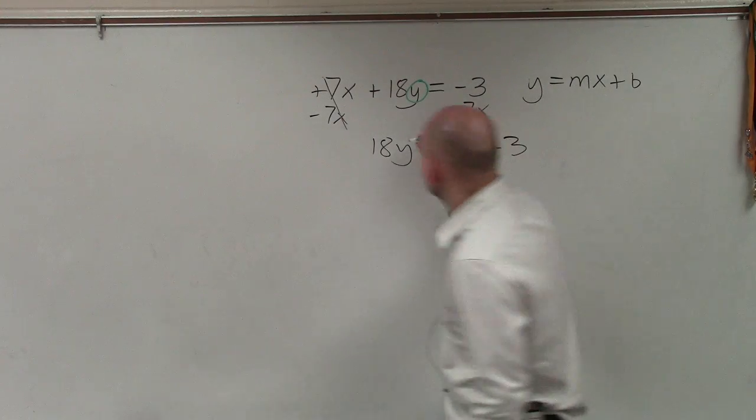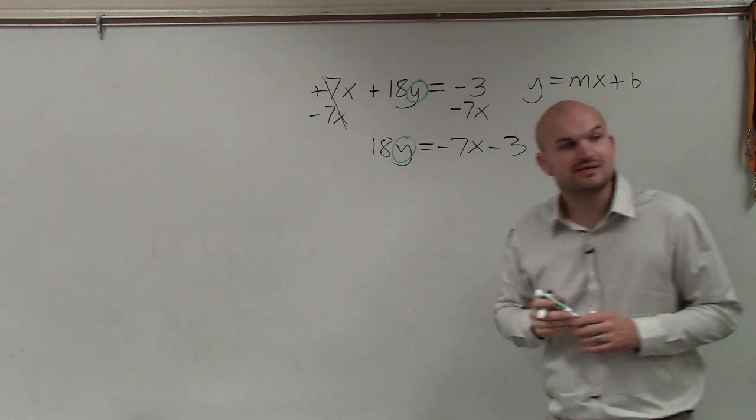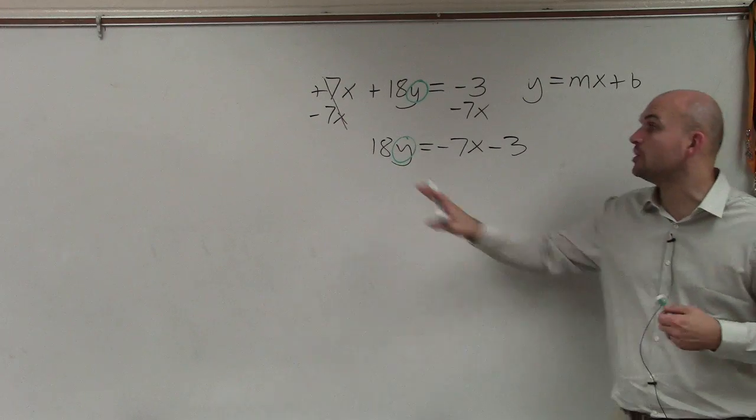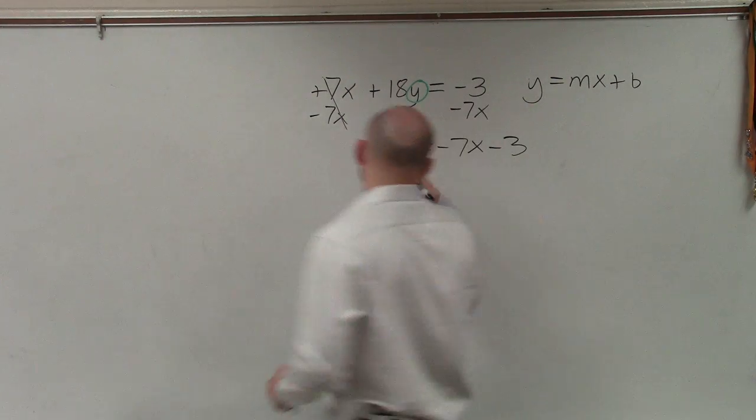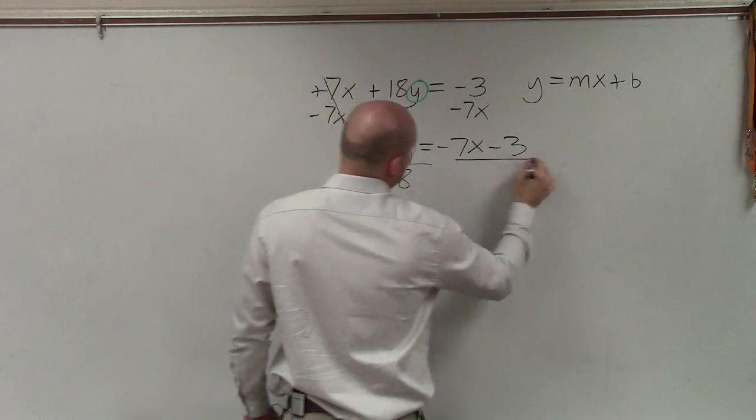Now again, I go back to my variable and I say, all right, what is happening to my variable? My variable is being multiplied by 18. So to undo multiplying, I divide by 18.